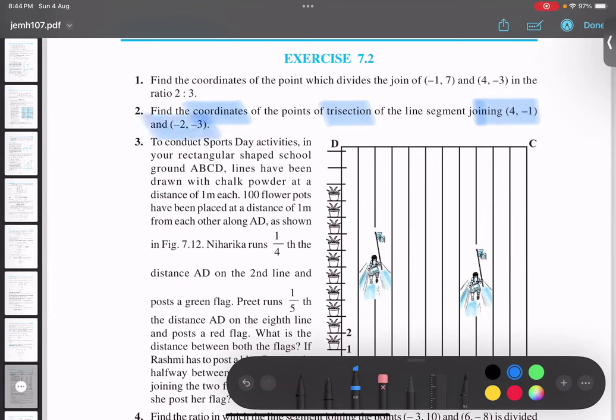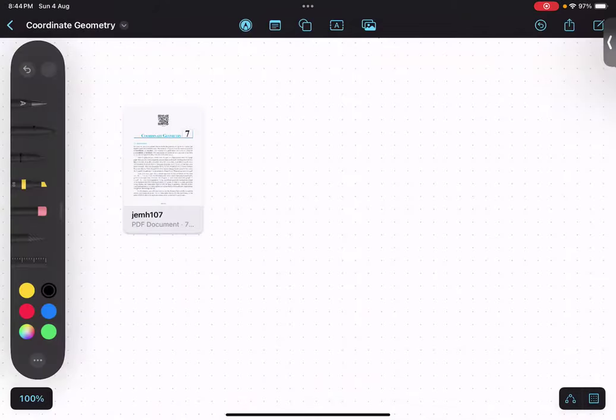I'm going to draw a rough diagram. First point is (4, -1) and second point is (-2, -3). These are the two points. The question is saying this is a line segment, not a line, because we have two endpoints. So this line segment is being divided.